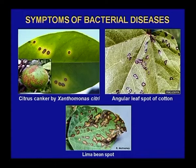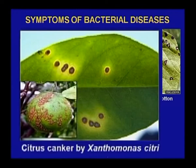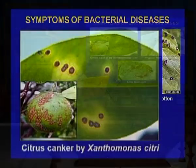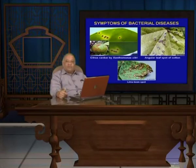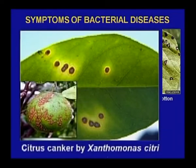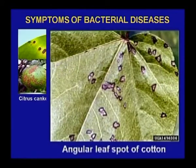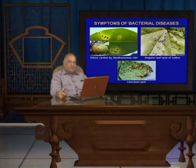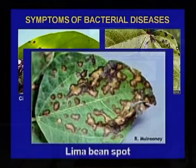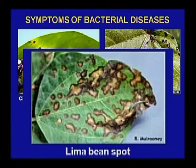Now I am discussing bacterial diseases. Citrus canker, which is caused by Xanthomonas citri, is a very common sight in our market — if we go to the market today, we will find a lot of citrus fruits infected with Xanthomonas citri. The leaves show spots, and the fruit shows symptoms of corky Xanthomonas. Secondly, angular leaf spot of cotton, an important cash crop — angular leaf spot is also caused by Xanthomonas. Thirdly, lima bean spot also shows watery, brownish spots caused by Xanthomonas or Pseudomonas bacteria.